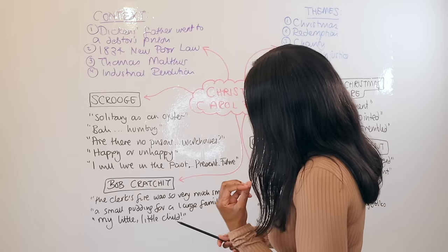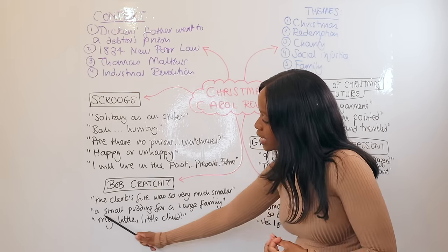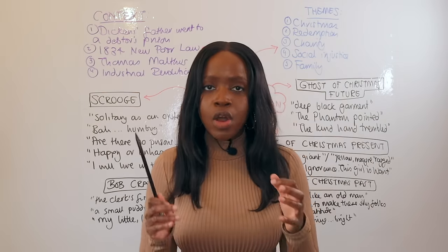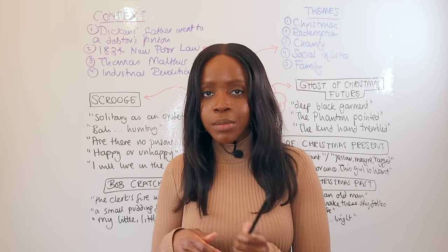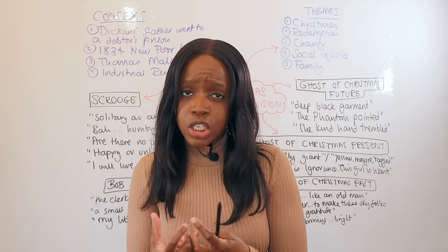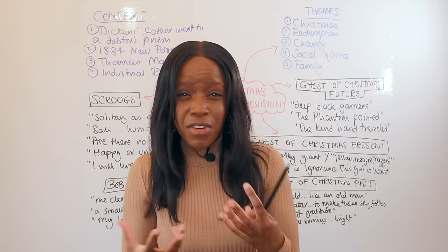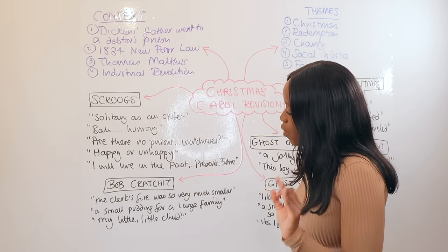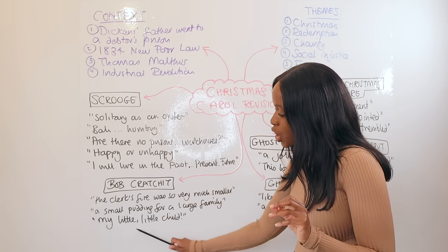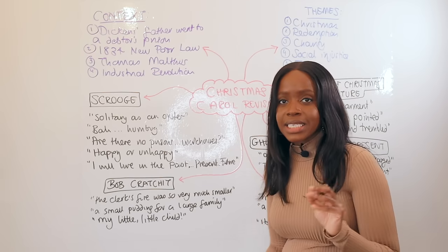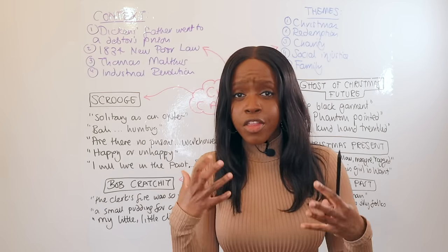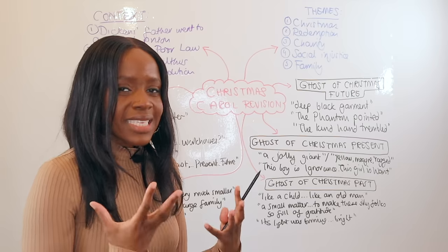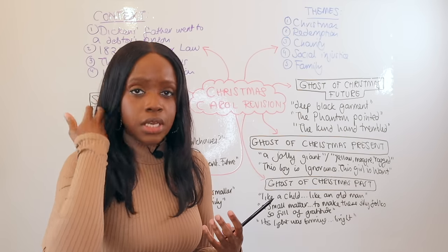The second Bob Cratchit quotation comes during the Christmas meal, where Dickens admits it was 'a small pudding for a large family.' The oxymoron of 'small' and 'large' illustrates how Scrooge's underpayment meant Bob couldn't provide well for his family — yet they were still happy together as a unified family. The final quotation is when Tiny Tim dies and Bob cries 'My little, little child' — an exclamatory sentence with repetition of 'little,' showing the direct consequences of Scrooge's behavior on the working-class poor.